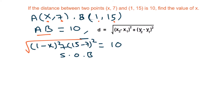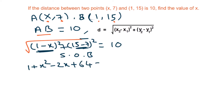Once we square, the root will go. We expand (1 minus x) whole square in the form of (a minus b) whole square: a square is 1, b square is x square, and 2ab is 2x. Also, 15 minus 7 is 8, and 8 squared is 64. Squaring both sides gives 100 on the right.